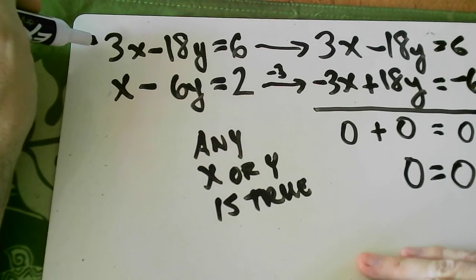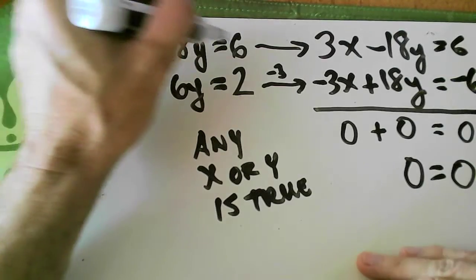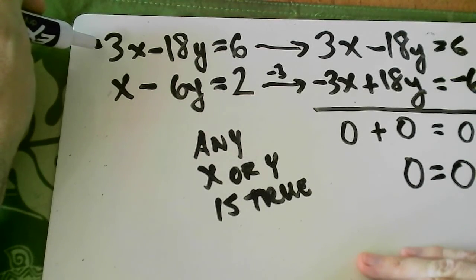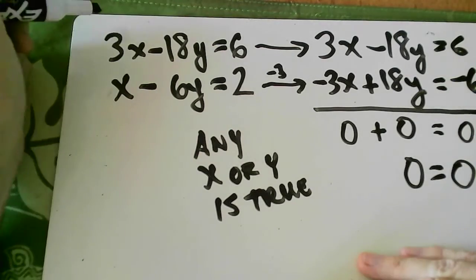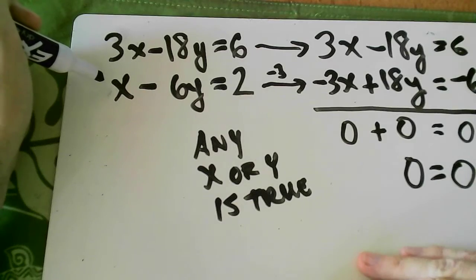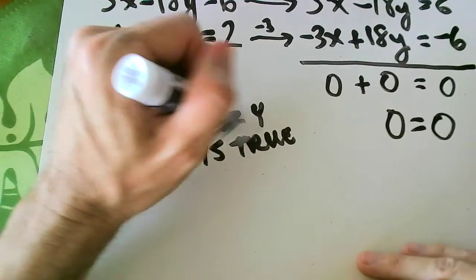And so one thing to do is when you're working in these kind of equations, you could have reduced the whole top equation by 3, divided 3 out of all of them. And then you would have recognized, oh, these are the same. But any x or y is true.